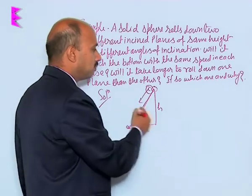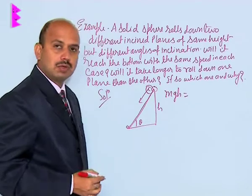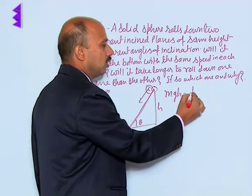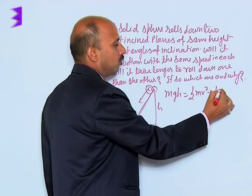We can write here mgh, that is total energy at the top, is equal to when it's rolling down: half mv² plus half Iω².